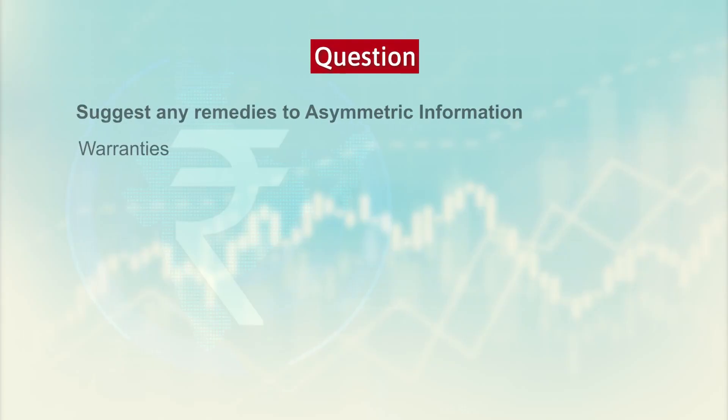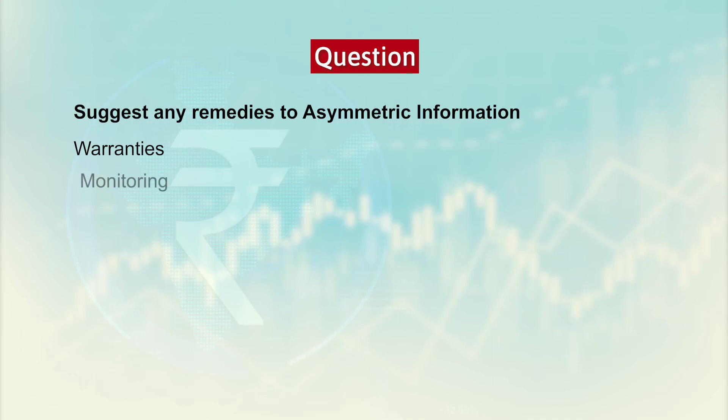Based on this we invite a question: suggest any remedies to asymmetric information. The first remedy is warranties and the second one is monitoring. By warranties we mean any kind of cost-protective shield, either in terms of a warranty policy or an insurance policy. By monitoring it takes care of the quality of the product through the review structure or any kind of online review platforms where the brand review is being done about the product or about the resale market.